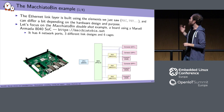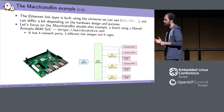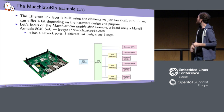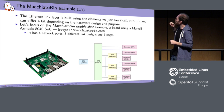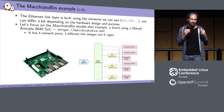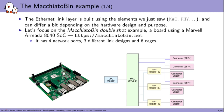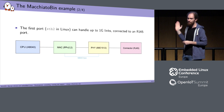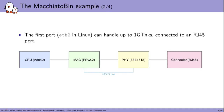We will see examples using a real device called the Macchiato Bin board. This board is an ARM64 board using an SoC from Marvell. It has four network ports with three different link designs, so we can see three examples of what an Ethernet link can be. The first port, represented as ETH2 in Linux, can handle up to 1 gigabit links, and it is exactly the simple design we just described.